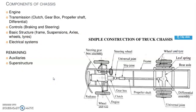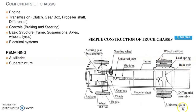This sketch shows the simple construction of a truck chassis. At the center is the frame, and to this frame there is a steering gearbox assembly, radiator, wheel and tire, the main engine, clutch, gearbox, propeller shaft, universal joint, steering wheel, leaf spring, rear axle, differential assembly, and universal joint. These are some of the important components attached to it.